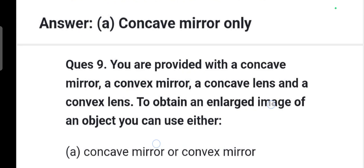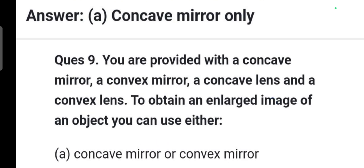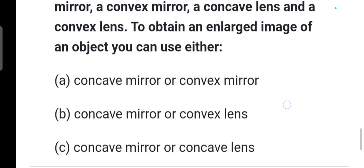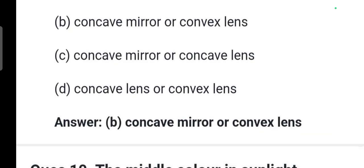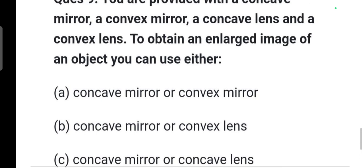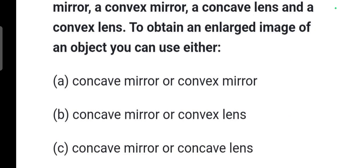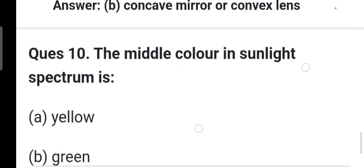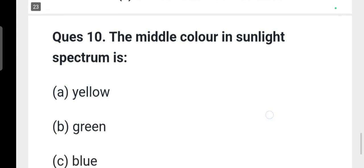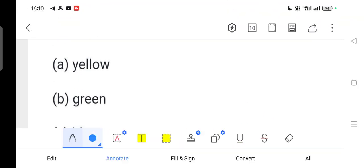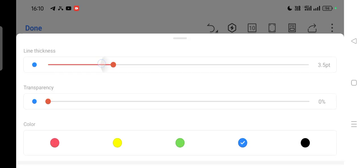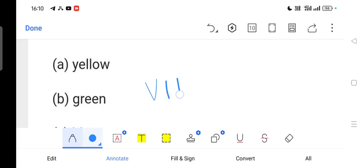Next question: You are provided with a concave mirror, a convex mirror, a concave lens and a convex lens. To obtain an enlarged image of an object, you can use either a concave mirror or a convex lens. So you can use these to obtain a large image, a real image. Next question: The middle color in the sunlight spectrum is green. You can remember VIBGYOR, the middle color is green.